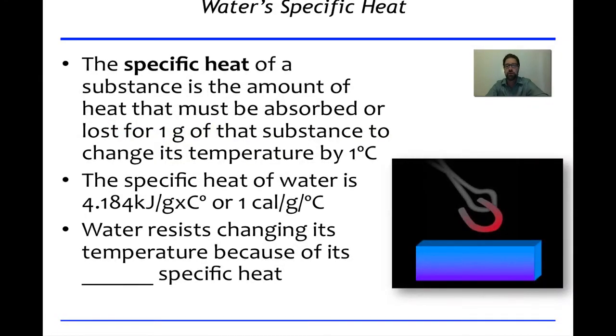That brings us to the definition of specific heat. The specific heat of a substance is the amount of heat that must be absorbed or lost for one gram of that substance to change its temperature by one degree. If we're looking at water as that substance, water has a high value of specific heat—4.184 kilojoules per gram times degrees Celsius, or one cal per gram per degree Celsius. Let me use an example.